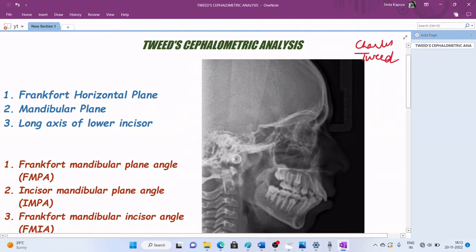This cephalometric analysis consists of three planes. First is the Frankfurt horizontal plane, mandibular plane, and the long axis of the lower incisors. But before we trace these planes, it is important that we look at a few cephalometric points which we will need in this analysis.